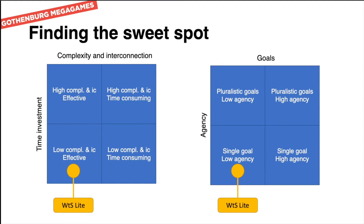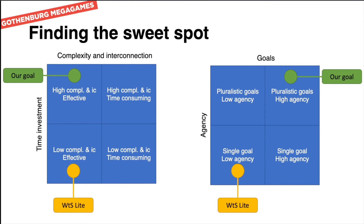But also balancing goals and agency. Goals could either be pluralistic — interconnected with a bunch of other things in the game — or it could be a single goal, as in Watch the Skies Light, where it just gives you money. And also agency, which is really important and part of the title of this talk, where you can have low agency or high agency — obviously a sliding scale. We set out to do something that had high complexity but was very effective, meaning you didn't have to spend a bunch of time interacting with it, and had pluralistic goals which give all players high agency.